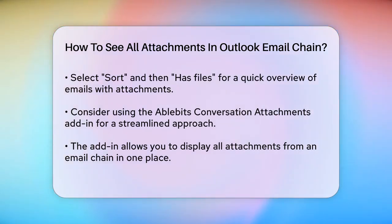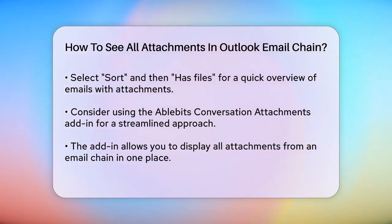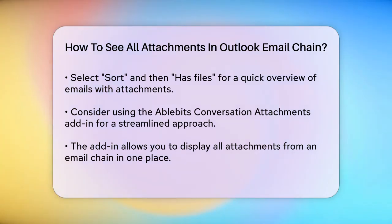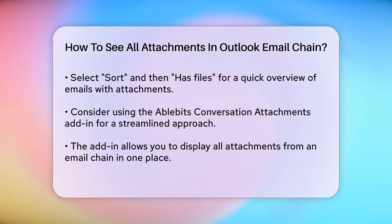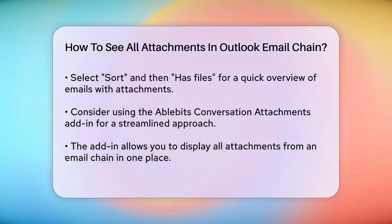consider using an add-in like AbleBits' Conversation Attachments for Outlook. This add-in allows you to display all attachments from an email chain in one location. Simply select the email chain, click on the Conversation Attachments button, and it will load all the attachments from that conversation. You can then click on any attachment to open the specific email it belongs to.